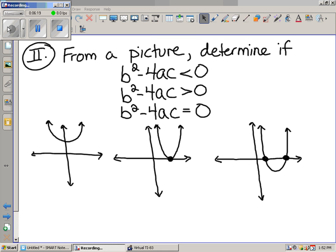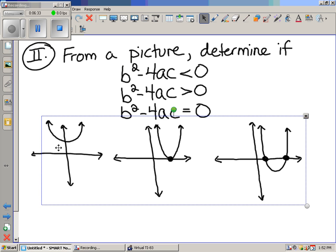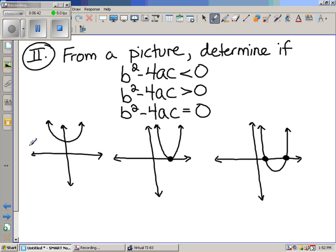Here we go. Part two. You've got to determine from a picture if the discriminant is less than zero, if it's greater than zero, or if it equals zero. The first one. It doesn't touch. Do you see? So, what kind of roots do we have? Imaginary roots, which means the stuff underneath the radical has to be what? Negative, which means the discriminant has to be negative. We are good at this.